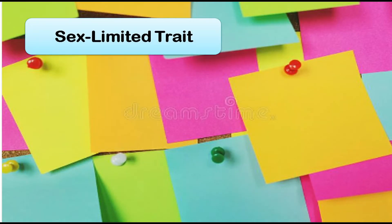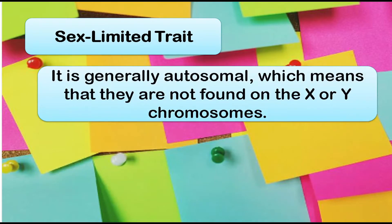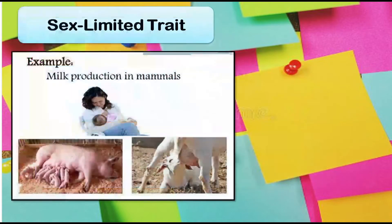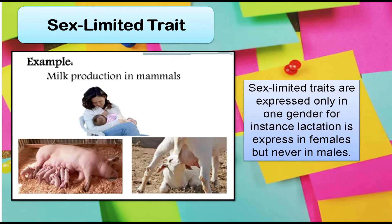Next, sex-limited traits. It is generally autosomal, which means that they are not found on the X or Y chromosomes. Sex-limited traits are those traits limited to only one sex. For example, sex-limited traits are expressed only in one gender — for instance, lactation is expressed in females but never in males.